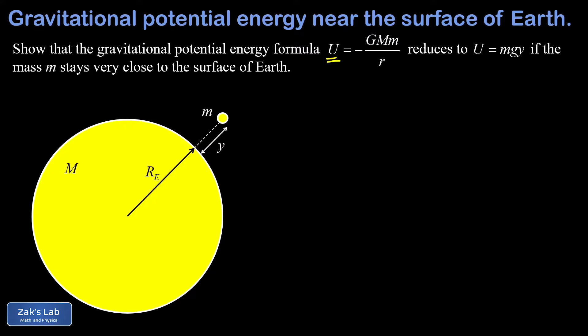In this video we treat big M as the earth or any other planet you like, and we're going to derive the more familiar expression for the gravitational potential energy, that's mgy, where y is the height above the surface of the planet, little g is the acceleration of gravity near the surface of the planet, and little m is the mass interacting with the planet. This formula is based on the approximation that our little mass m always stays very near the surface of the planet.